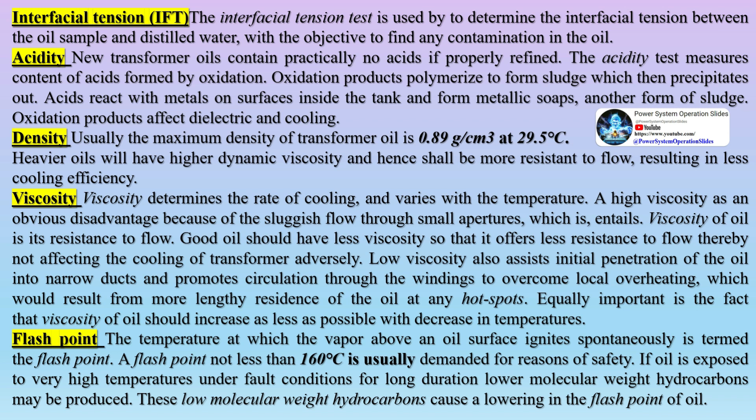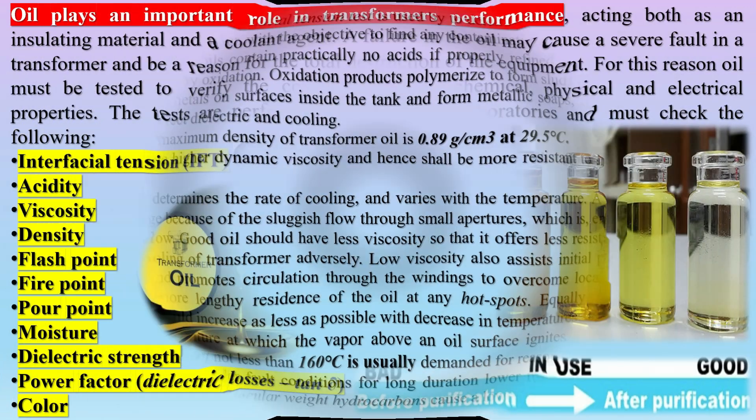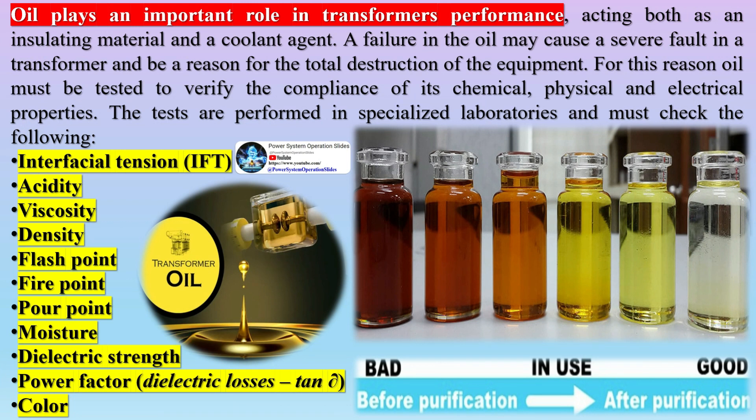Density: usually the maximum density of transformer oil is 0.89 g/cm³ at 29.5 degrees Celsius. Heavier oils will have higher dynamic viscosity and hence shall be more resistant to flow, resulting in less cooling efficiency. Viscosity determines the rate of cooling and varies with temperature. A high viscosity is a disadvantage because of sluggish flow through small apertures. Good oil should have low viscosity so that it offers less resistance to flow, thereby not adversely affecting the cooling of the transformer.